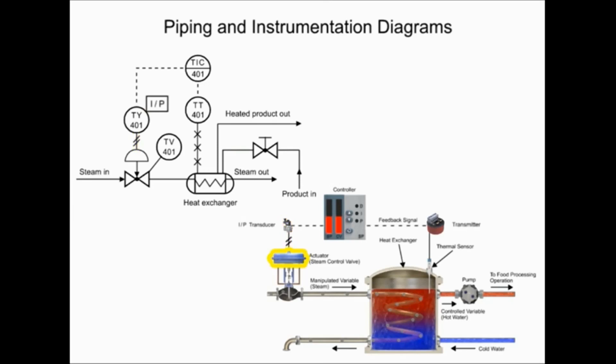The pneumatic controlled diaphragm actuator that opens and closes the globe valve regulates steam in the process. The actuator is represented by the half circle in the P and ID.